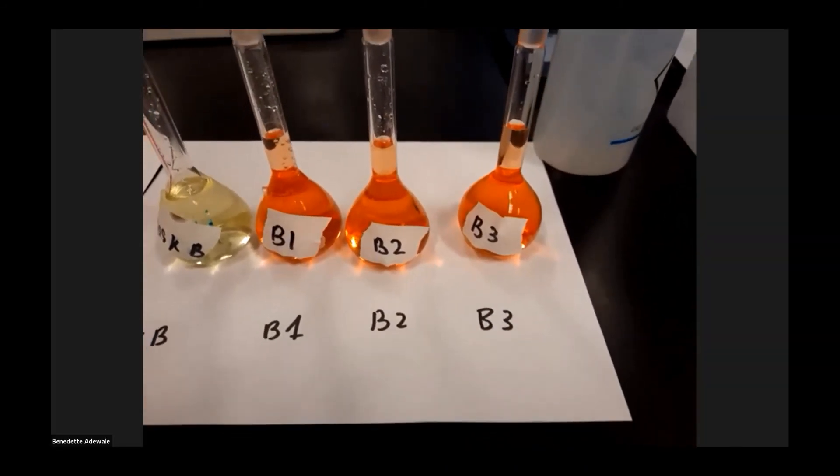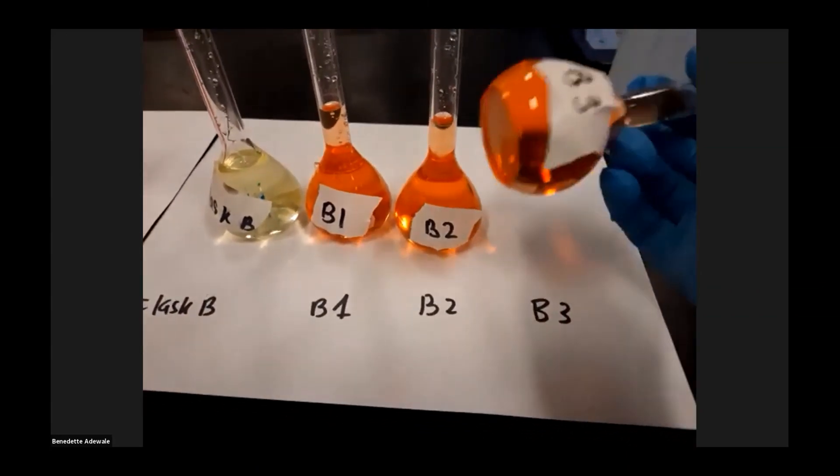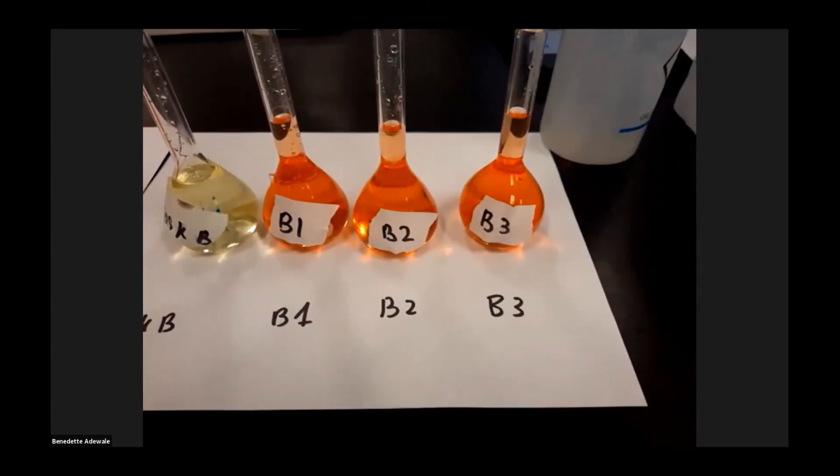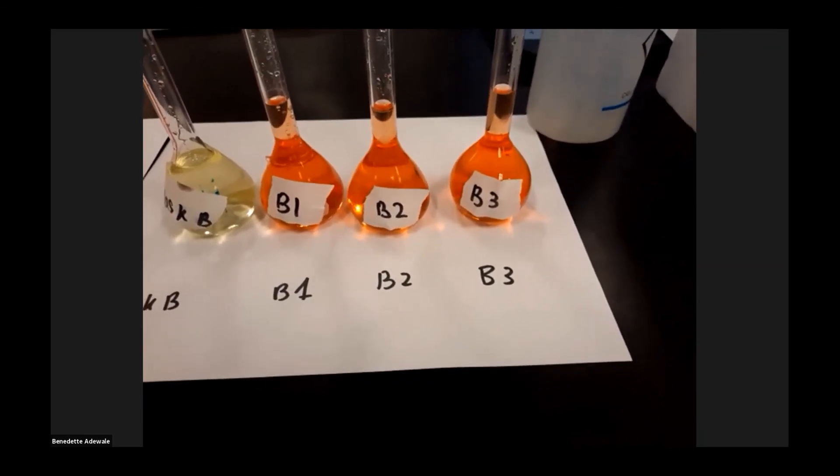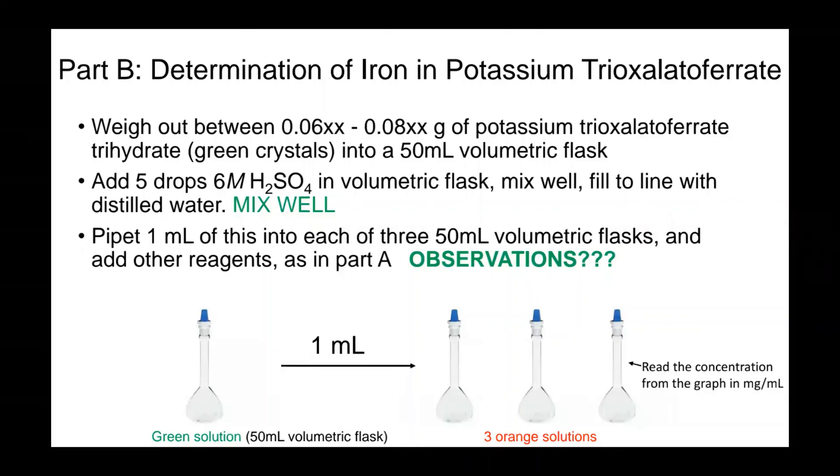Then you pipette 1 ml of this into each of three 50 ml volumetric flasks and add other reagents as you did in Part A. Make sure you record your observations. For Part B, you are going to have similar flasks. Once you prepare your solutions for Part B, Part B is your unknown. Then you are going to get the absorbance for flasks B1, B2, and B3. Then you take the average of the absorbance values.